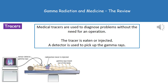Another use of gamma radiation is as a medical tracer. This allows us to diagnose problems, or the location of a problem, without the need for an operation — and if we don't need an operation, there's no risk of infection. What actually happens is we give the person a tracer to either eat or inject, depending on which organ system we're looking at. We then use a detector passed over the surface of the body to identify where the gamma radiation changes, and therefore the location of the problem.